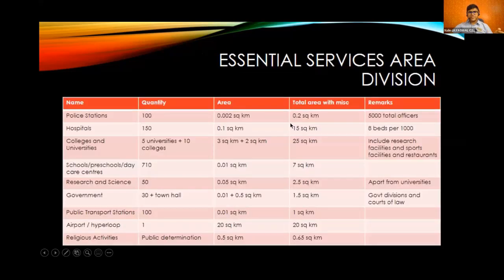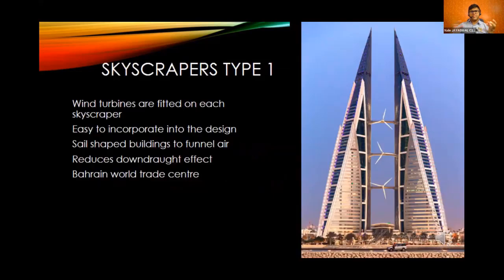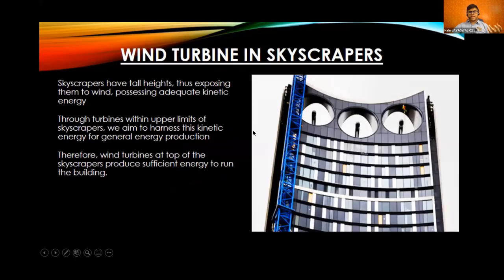The essential services area division was designed taking inspiration from the world's best police stations and hospitals, giving exactly the resources needed to operate efficiently. The business center of the city will be within a small radius to avoid much walking for business people, using skyscrapers to allow more area. In current skyscrapers there is the downdraft effect — wind hits the skyscrapers and goes down to create extreme wind speeds at street level, causing cars to topple in certain instances. Instead of making wind our enemy, we are harnessing it to create energy for the skyscrapers themselves.